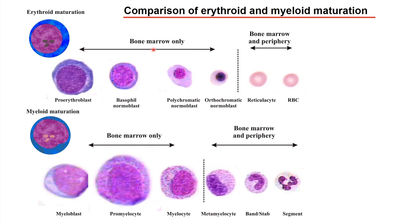Looking at the two most important cell populations in the bone marrow — the erythroid in the upper panel and the myeloid in the lower panel — they are not the same and they do have some very striking differences. The erythroid cells do have a round nucleus, while the myeloid cells do not have a round nucleus. Another very important difference is the color of the cytoplasm: the erythroid has a very basophilic cytoplasm, while the myeloid cell line is less basophilic, or less blue.